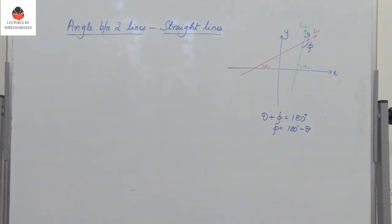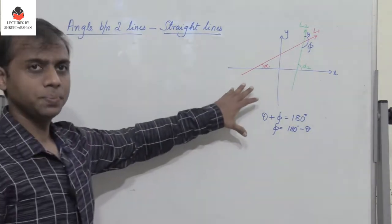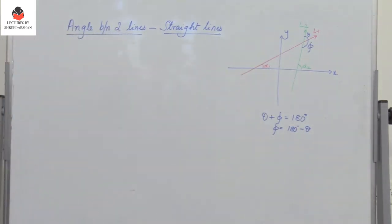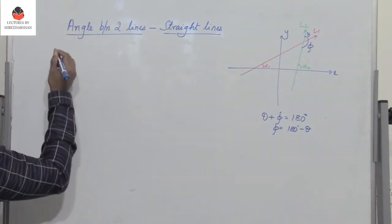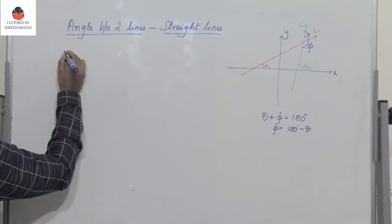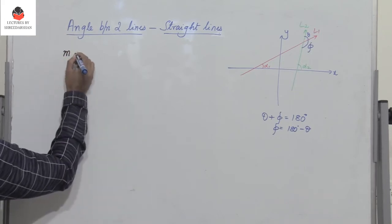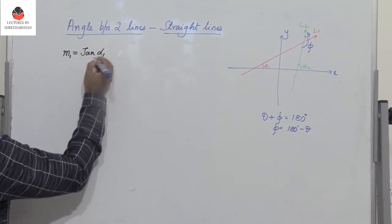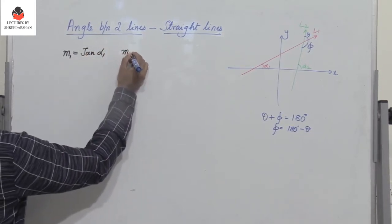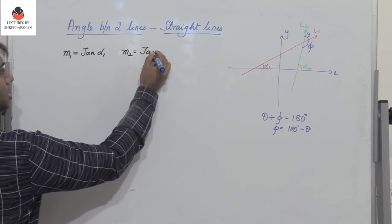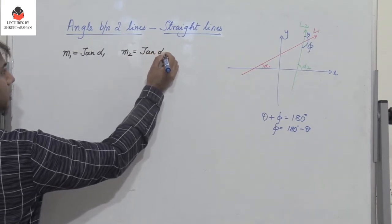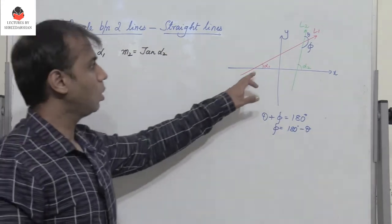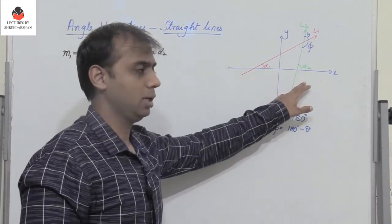Now let us observe this figure. We need to find the angle theta between the two lines. Let the slope of line l1 be m1, so m1 equals tan(alpha1). Similarly, m2 equals tan(alpha2). So m1 and m2 are the slopes of lines l1 and l2 respectively.